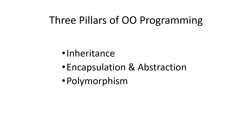There are three, maybe four, pillars of object-oriented programming: inheritance, encapsulation, abstraction, and polymorphism. I want to talk a little bit more about inheritance.